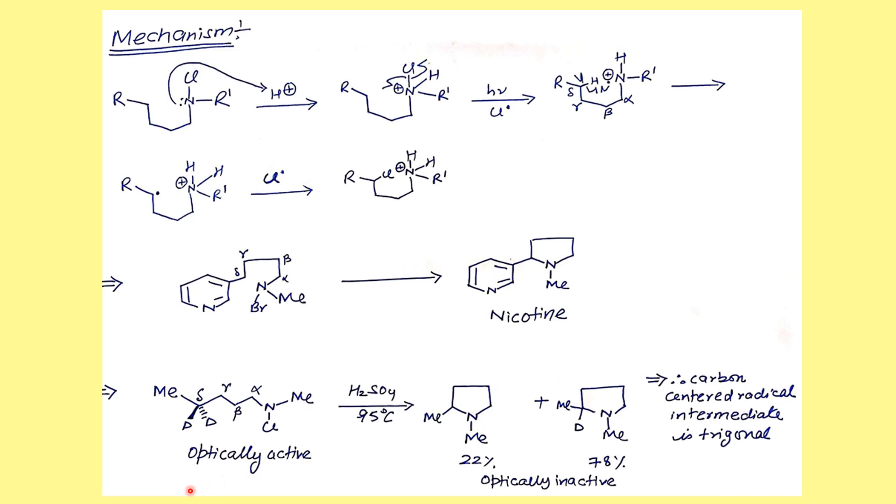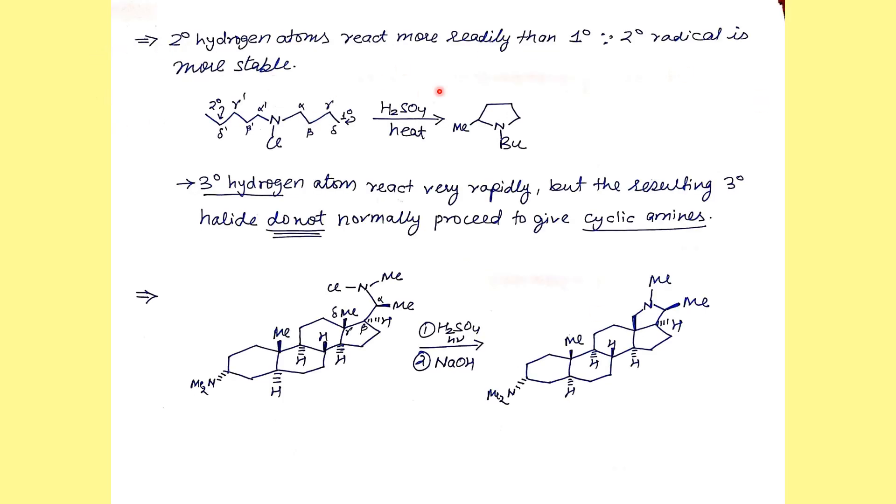This is a very important example in which there are two positions where the delta hydrogen is present. If abstraction of proton takes place from this side, it gives secondary radical. On the other side, it gives primary radical. We know secondary radicals are more stable, so the cyclization takes place exclusively from this side. This product forms exclusively; the primary product does not form at all.